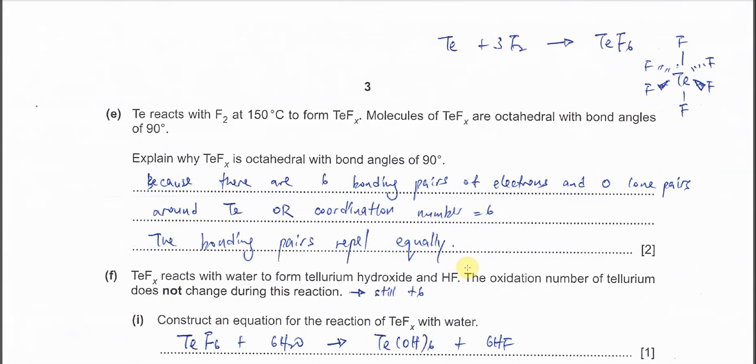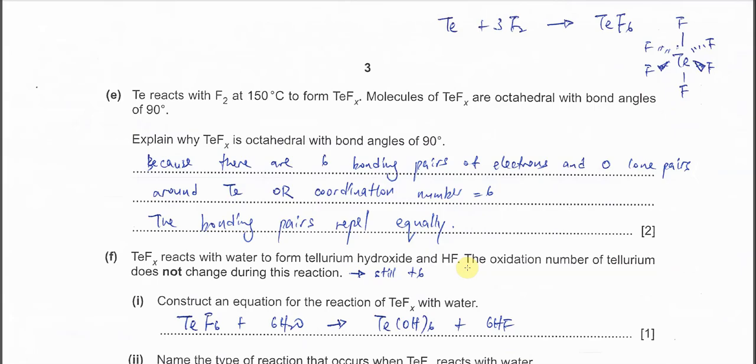Okay, so for part E, Te reacts with F2 at 150 degrees C to form TeF subscript X. Molecules of TeF subscript X are octahedral with bond angle 90 degrees. Okay, so first you need to know how the octahedral looks like. So, it's telling you Te is going to bond to six fluorine. It's confirmed. Because with six fluorine, then it can form octahedral structure like this. And of course, the bond angle, all here, they are 90 degrees.